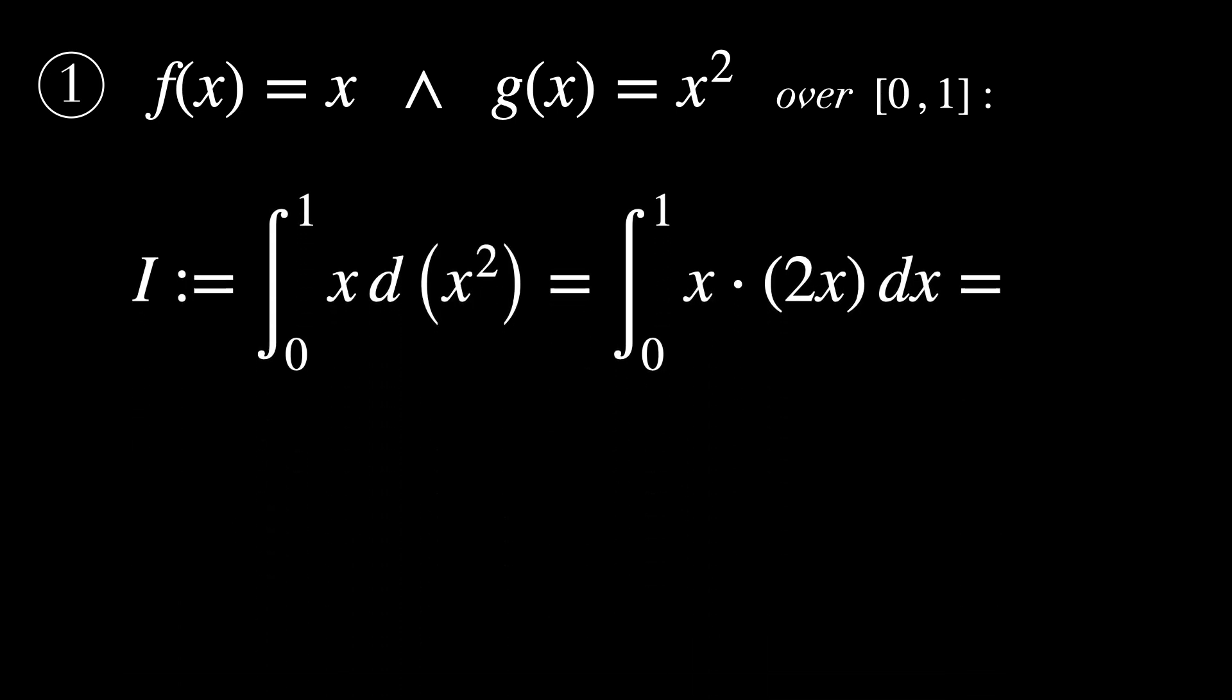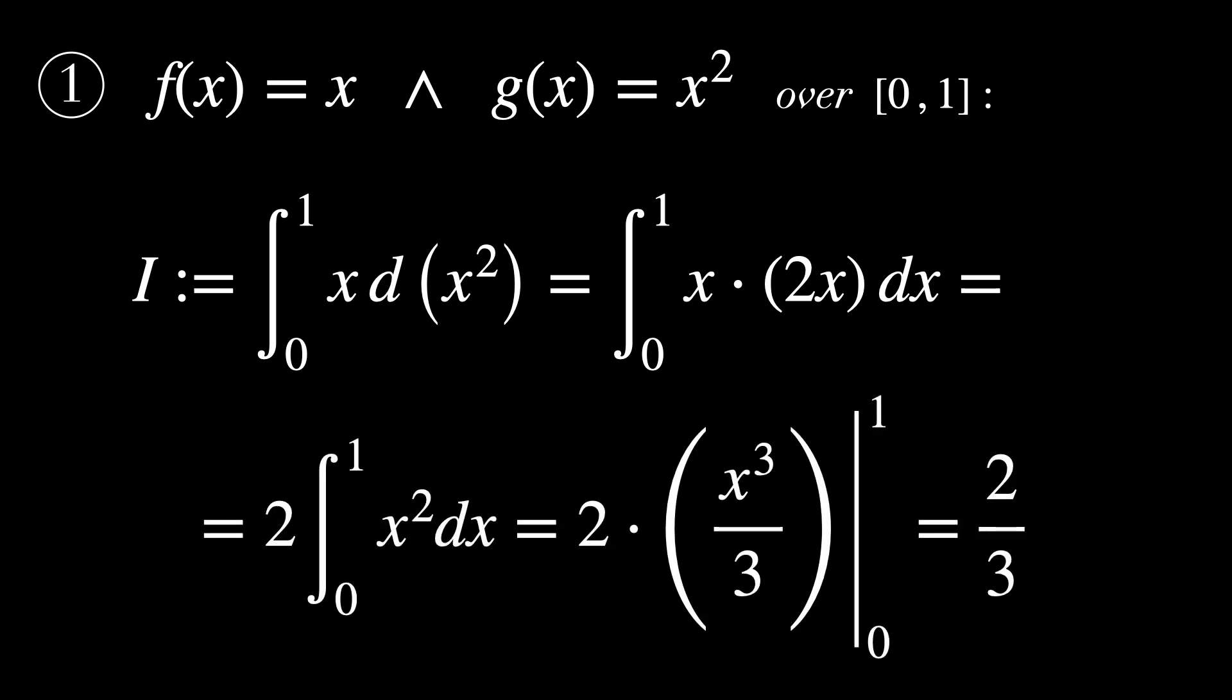The first non-trivial example is f equals x and g equals x squared over the interval [0,1]. I here will be defined as the Riemann-Stieltjes integral from zero to one of x dx², which equals the integral of x times 2x. The final result is two-thirds.